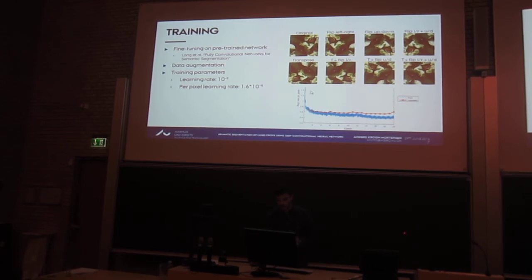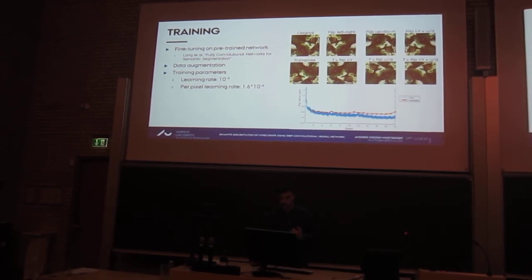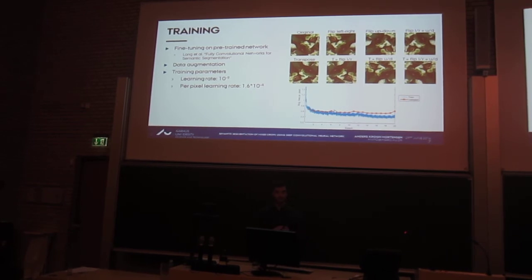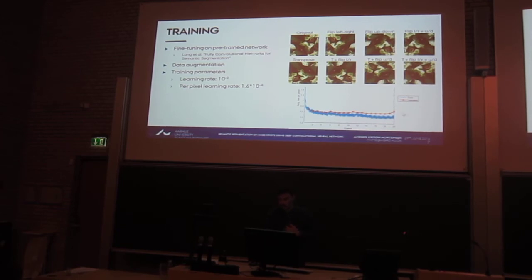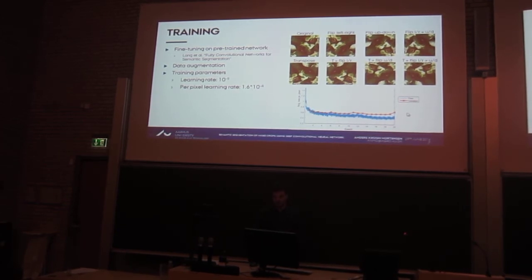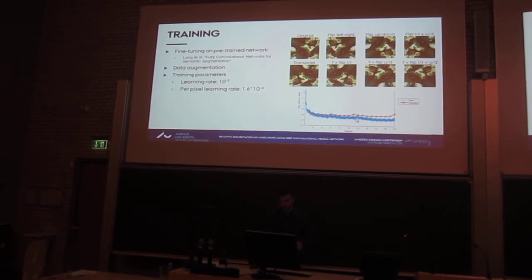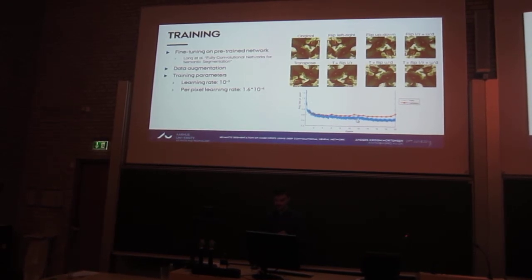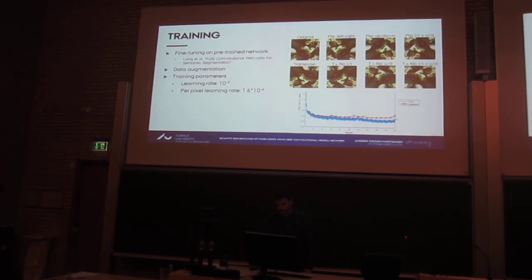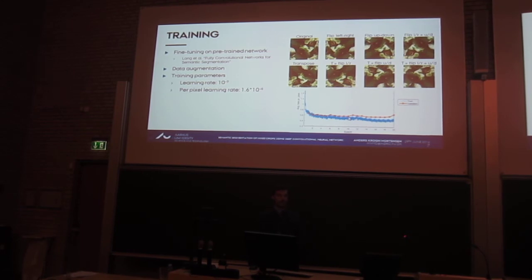You can see the training progress in the bottom graph. The blue line is the average loss per pixel for the training set, and the red or orange is the validation set. Around epoch 10 the two start to separate and the validation loss actually starts to increase, so we saved the model parameters at epoch 10.